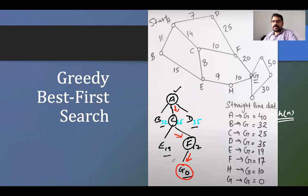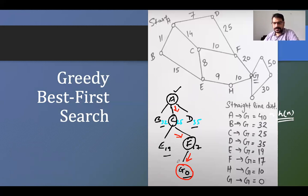As you can see, it is much easier to find the solution when we have heuristic values. Based on those heuristic values we decide which particular node to explore next.